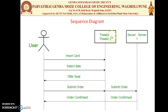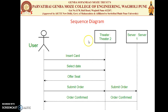The sequence diagram has an element called the lifeline, represented by a rectangle with the object and class name. The solid lines describe the actor's interaction. This example is of booking seats at a theater. The user first inserts a card — which could be a debit or credit card — then selects a date for the movie.